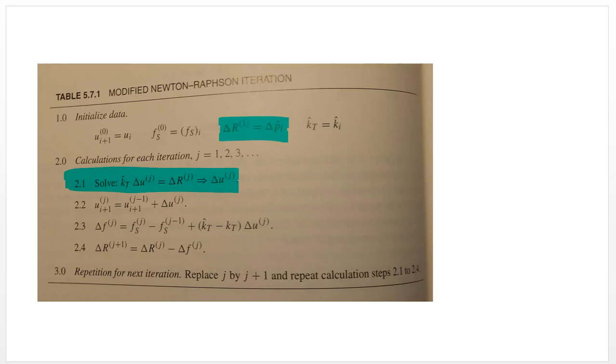And you're going to define delta R as delta P hat. And you're going to define the restoring force as your initial Fs. Once you have delta U, you add that to your prior displacement and you get your new displacement. But then this part here...